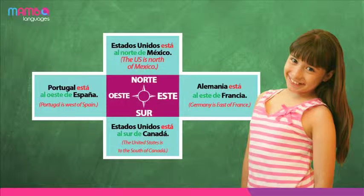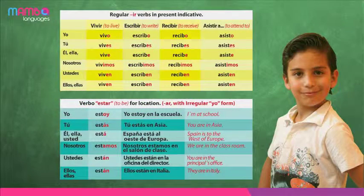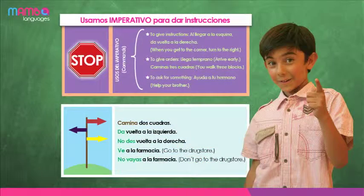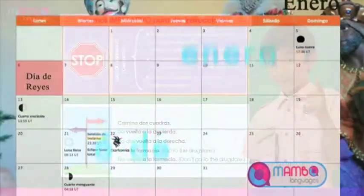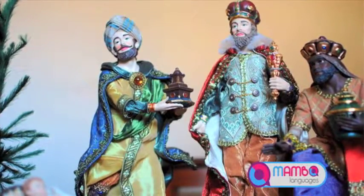At the same time, students will learn to locate countries and continents on the map through the use of cardinal points and the verb estar. Students will reinforce their knowledge of verbs in the present tense, of the verb estar, and of other verbs related to traveling and vacation. They will also learn how to give instructions on how to arrive at a place using the command tú. Their knowledge and understanding of Hispano-American culture will continue to grow.